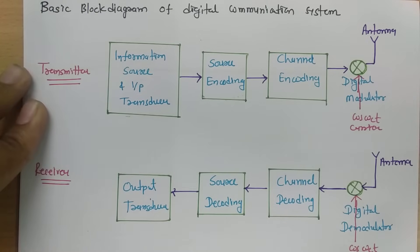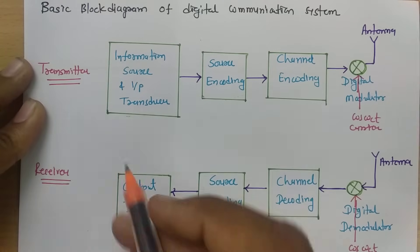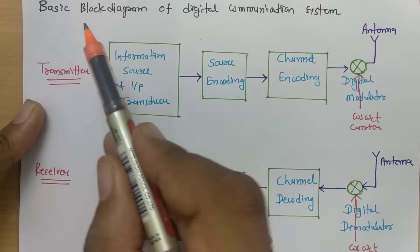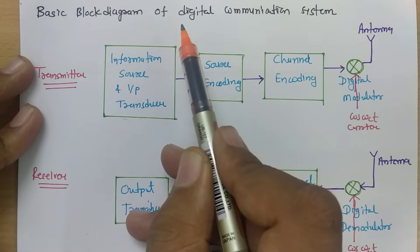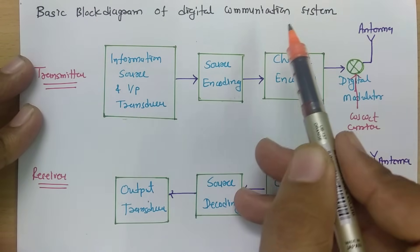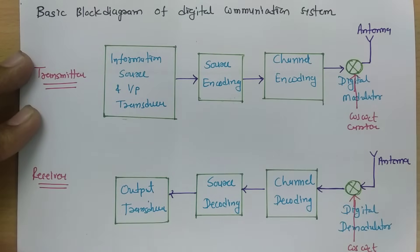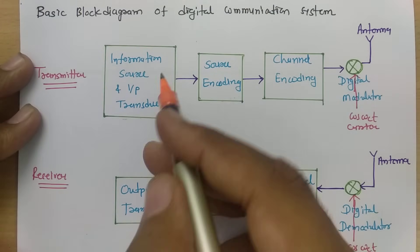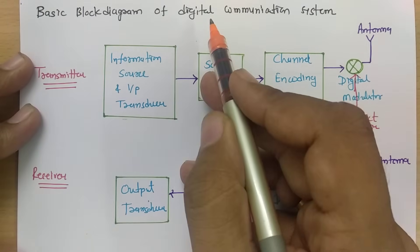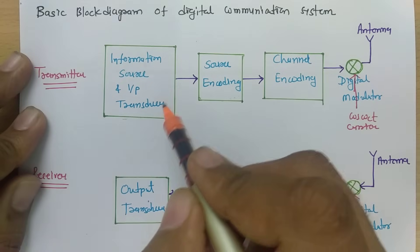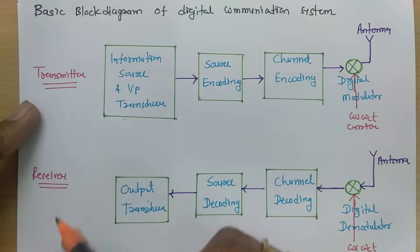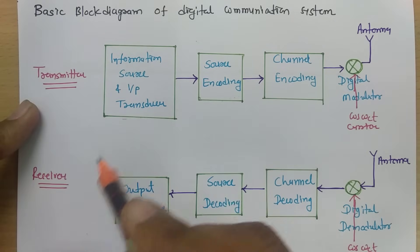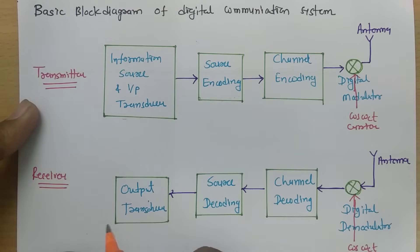Welcome to the digital communication playlist. In this session, I will be explaining the basic block diagram of a digital communication system — what the block diagram looks like at the transmitter side and receiver side. I'll explain each and every block in detail.